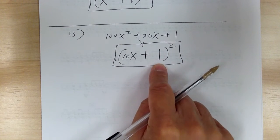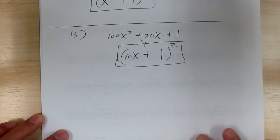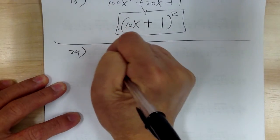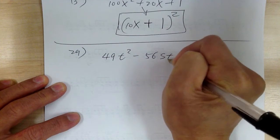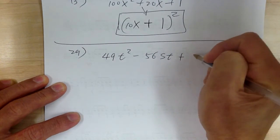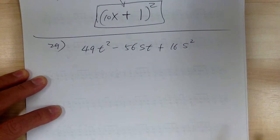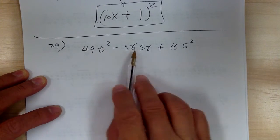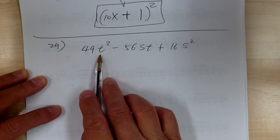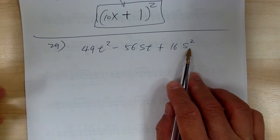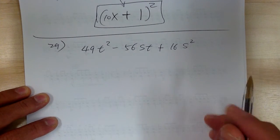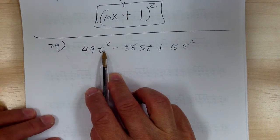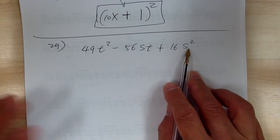Let's go to number 29. You've got 49t squared minus 56st plus 16s squared. Step one: common factor — cannot. You can't factor a number or variable across all terms, because the first term has no s and the last term has no t. Step two: three terms, check for perfect squares. 49 is 7 squared — good. t squared is good. 16 is 4 squared — good. s squared is good. Front and back are all perfect squares, so check if it's a perfect square trinomial.